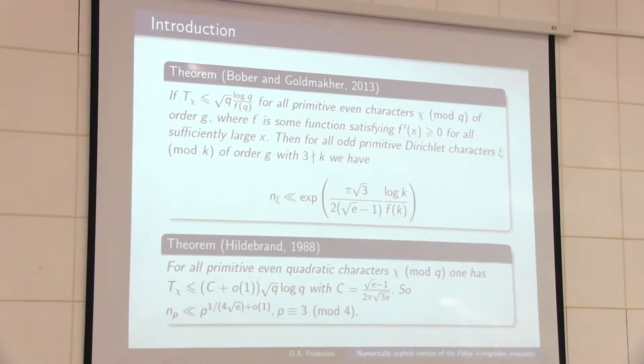This is a very remarkable result because you can combine this result with the theorem of Hildebrand. He proved that for primitive even quadratic characters, we have a bound. Then, this result in the work of Bober and Goldmacher will have the best known bound for a certain quantity.